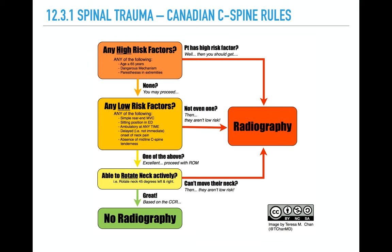So the C-spine rules. If someone comes in after trauma and they've got neck pain, the decision you need to make is whether there could be a fracture and whether you need a CT or an x-ray of the neck. There are the Canadian C-spine rules, which have high risk factors, low risk factors and range of motion. If you've got any of these features, then you need imaging.